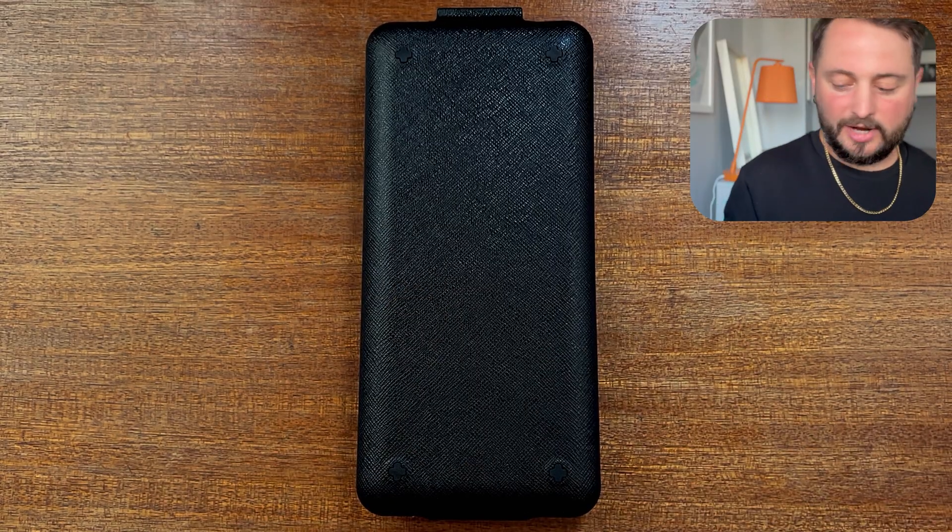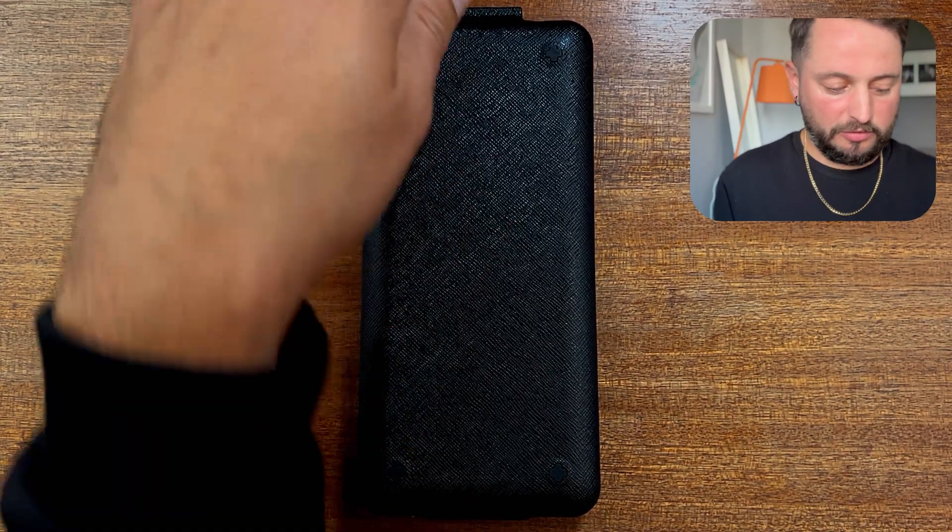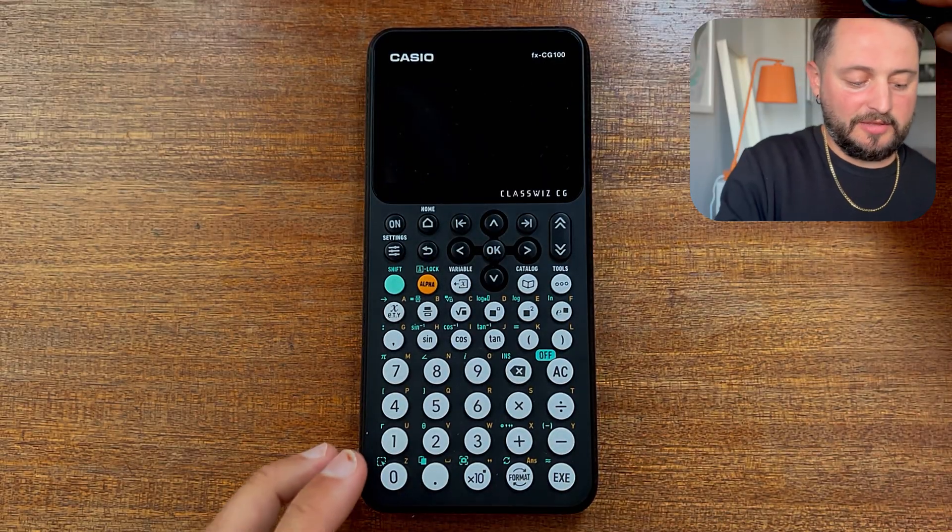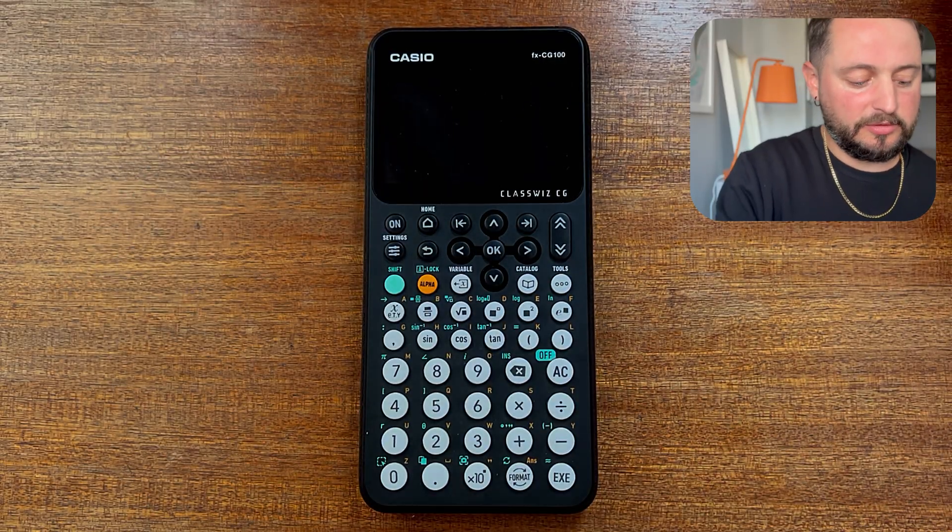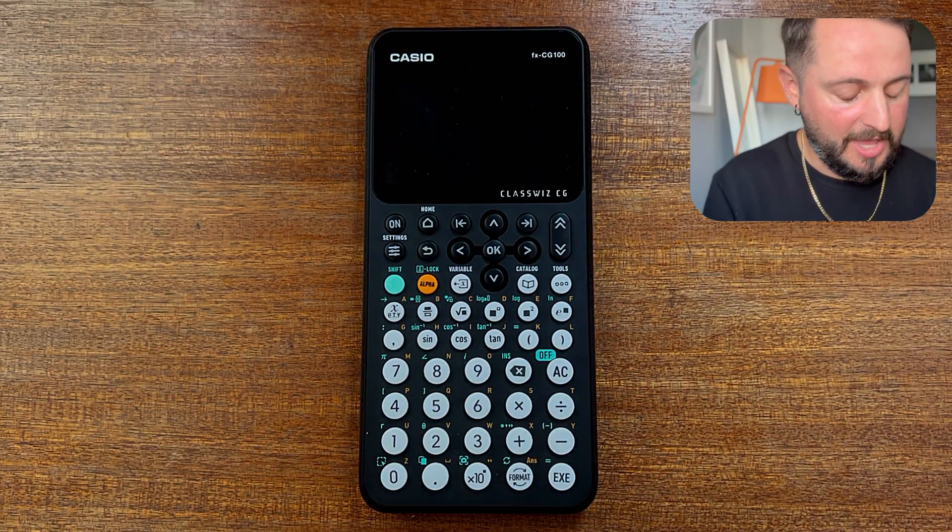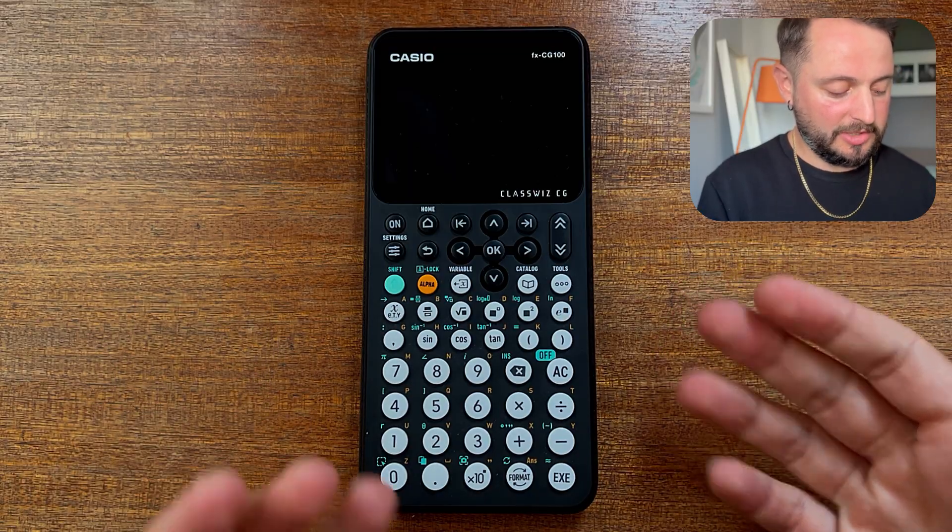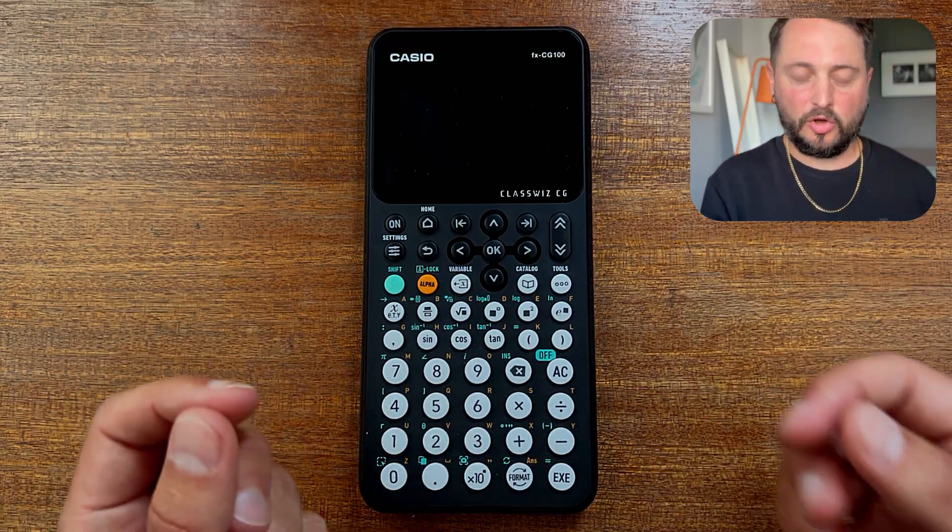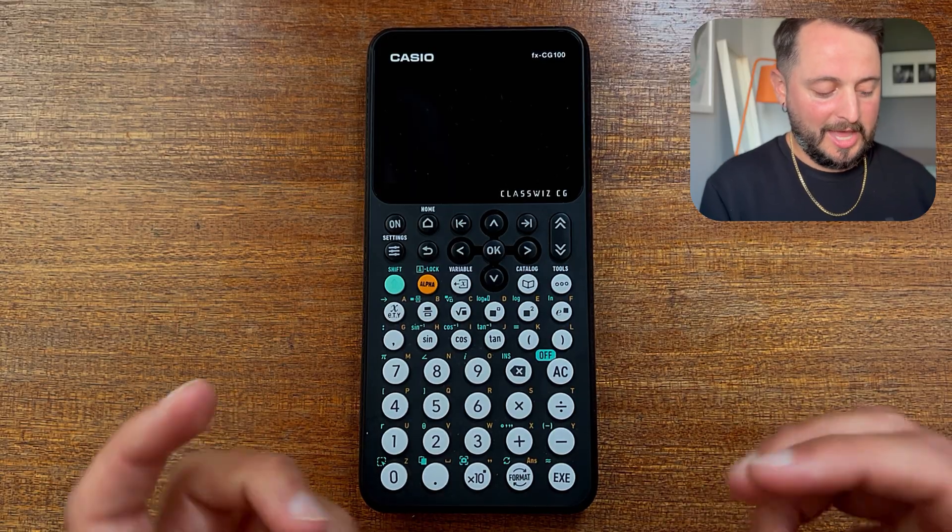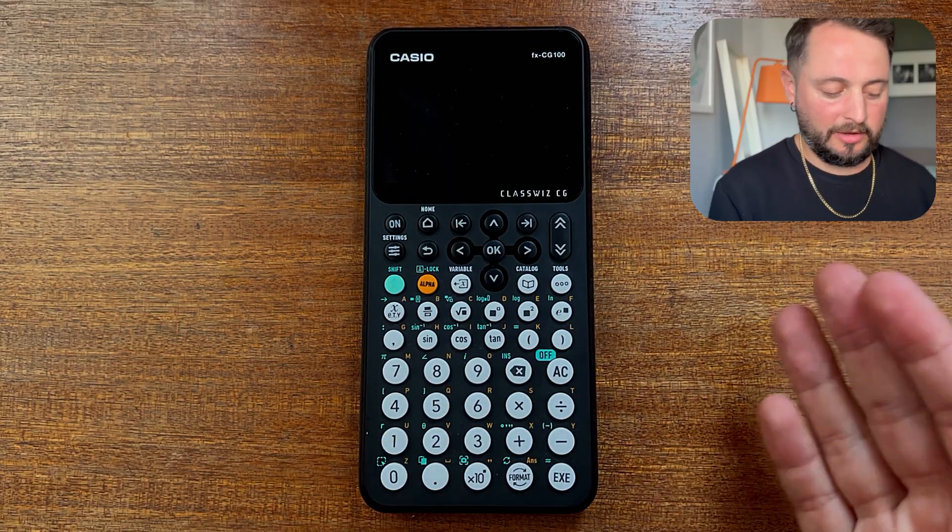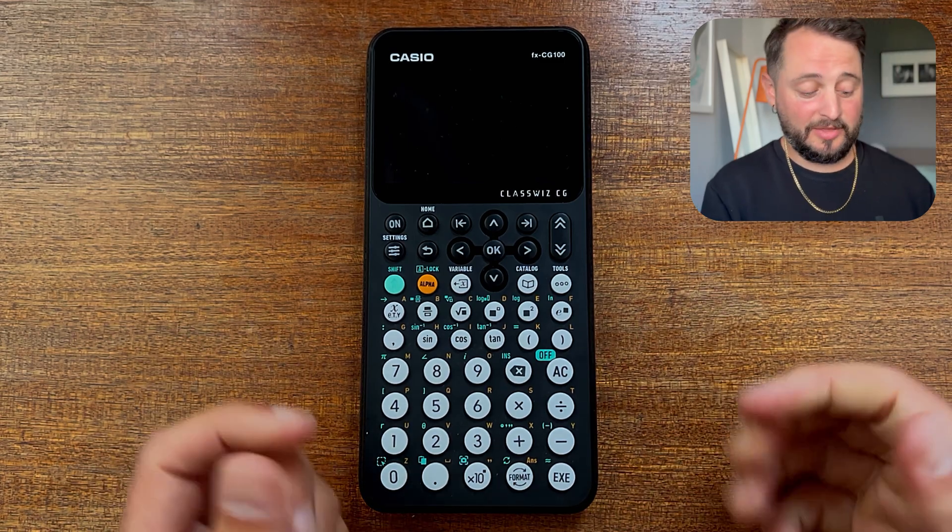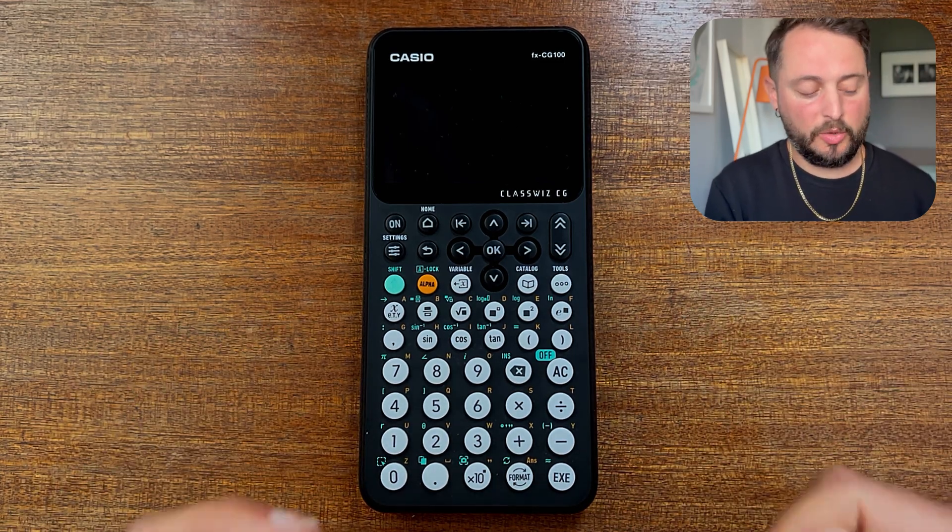We have the CG100 right here and this CG100 should feel quite familiar to the ClassWiz that you've probably been using at GCSE. It's got this clip-on case as opposed to the slide-on case with the CG50. And my first impressions is that it just looks really sophisticated. It looks like a kind of grown-up version of the ClassWiz that you'll have been using. And that continuity between the ClassWiz and the ClassWiz CG, the graphics version, is what's going to make this so pick up and play and so easy to use.